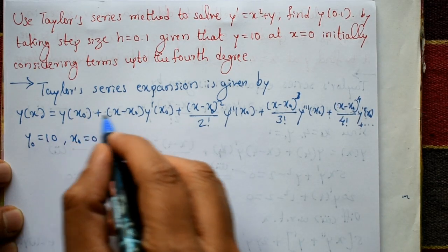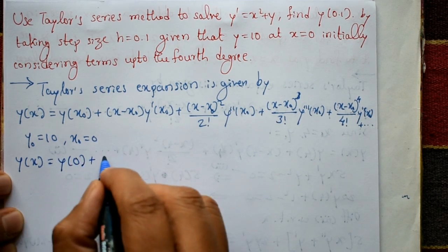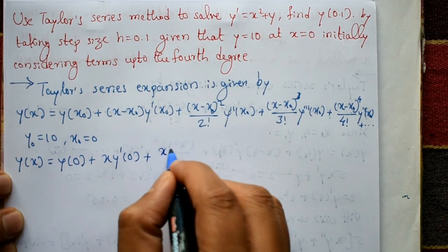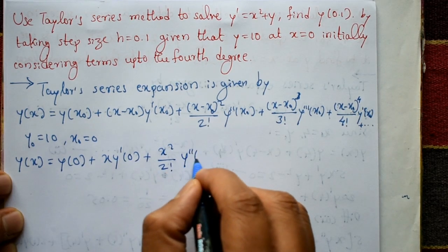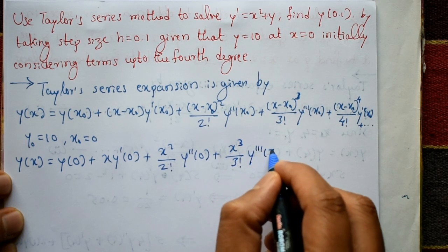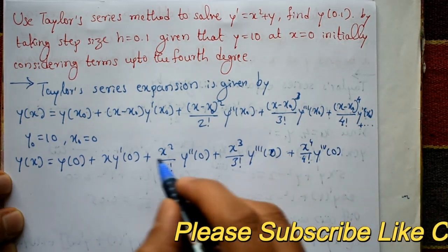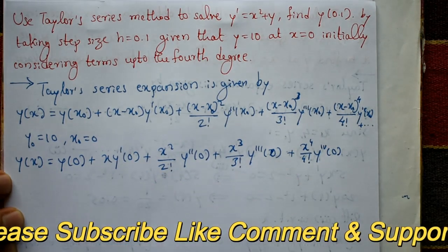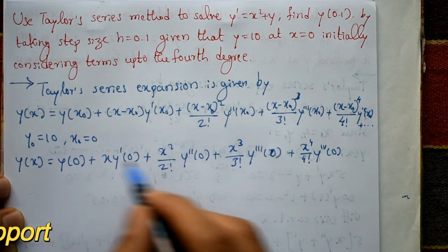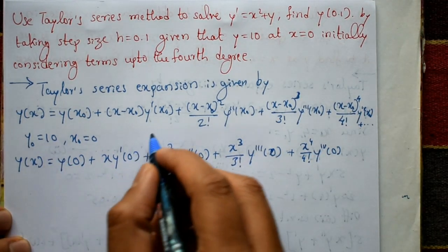Using the initial values in the Taylor series, y(x) = y(0) + x·y'(0) + (x²/2!)·y''(0) + (x³/3!)·y'''(0) + (x⁴/4!)·y''''(0). We need to find the values of y'(0), y''(0), y'''(0), and y''''(0) to substitute in. Note that y(0) = 10.